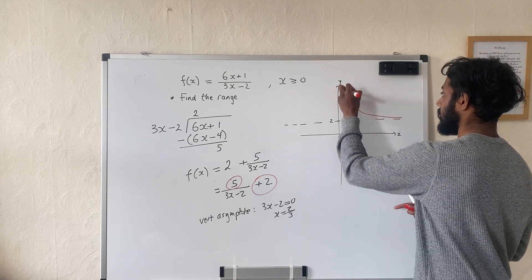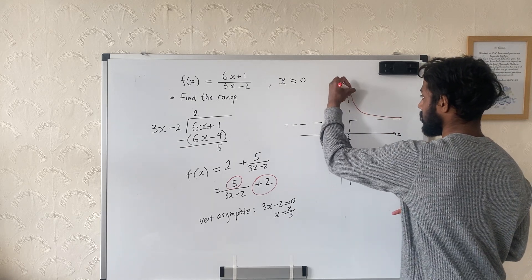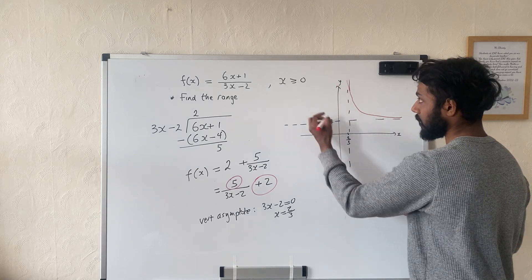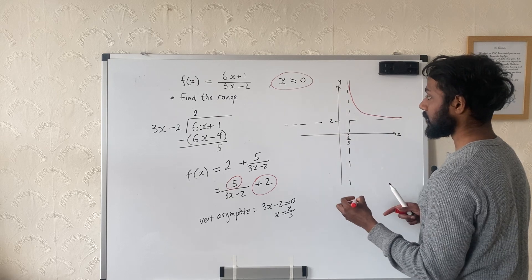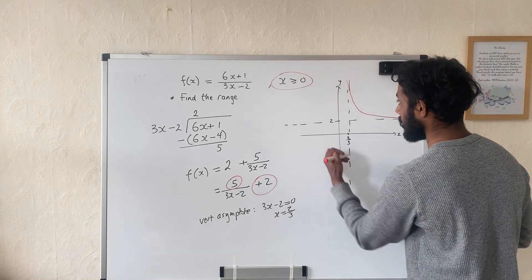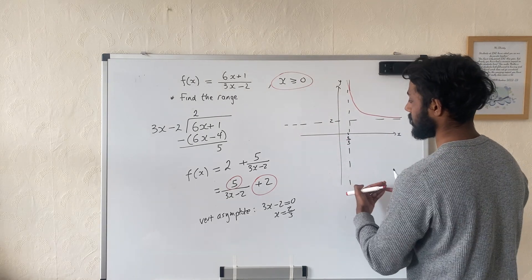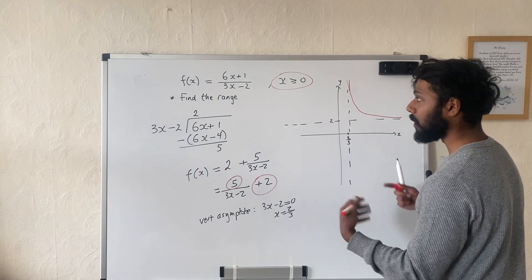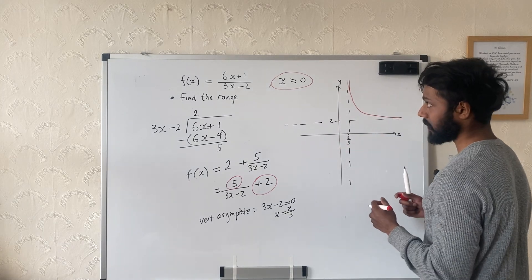So let me just draw this one. And again, should not touch the asymptote. And before I draw this one, I've got this domain of x more than equal to 0. So I'm not going to go beyond, I'm not going to go past the y-axis. I'm not going to cross the y-axis essentially.